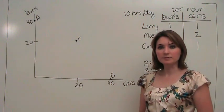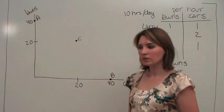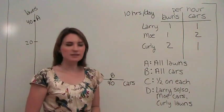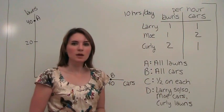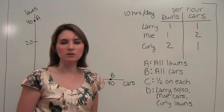Point B was down here. Now we have one more. What about this point D, where Larry splits his time fifty-fifty, but Moe only washes cars and Curly only mows lawns?